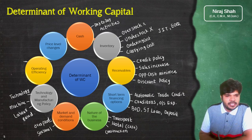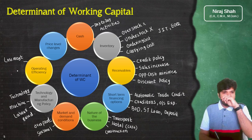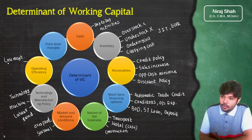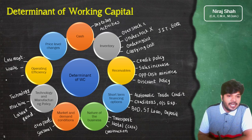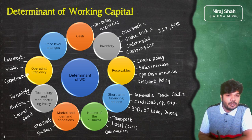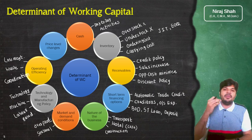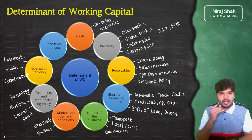Operating efficiency भी एक determinant है — अगर आप loss management कर सकते हो, production में जो waste होता है उसे eliminate या reduce कर सकते हो, production activity का coordination improve कर सकते हो, तो ये सब control के measures लेकर भी आप अपनी working capital requirement को कम कर सकते हो।